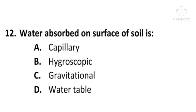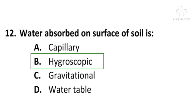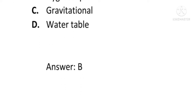Next question: Water absorbed on the surface of soil is called — A) Capillary water, B) Hygroscopic water, C) Gravitational water, or D) Water table. The correct option is B, Hygroscopic water. Water absorbed on the surface of soil is called hygroscopic water; B is the correct option.